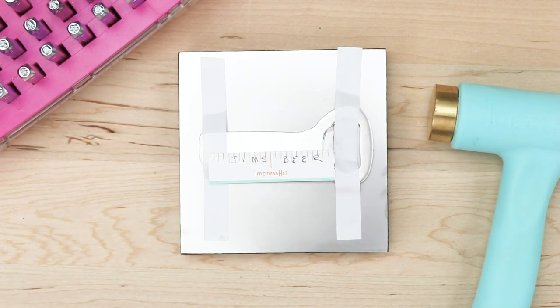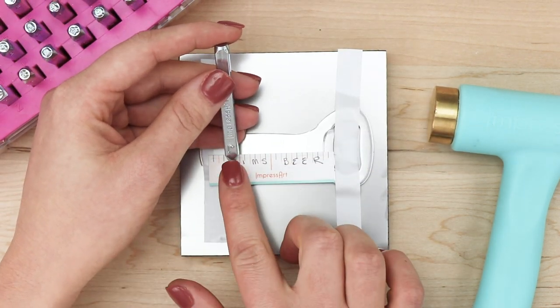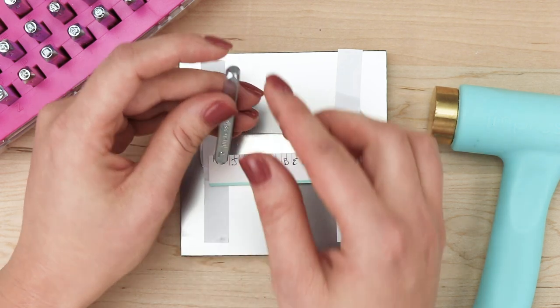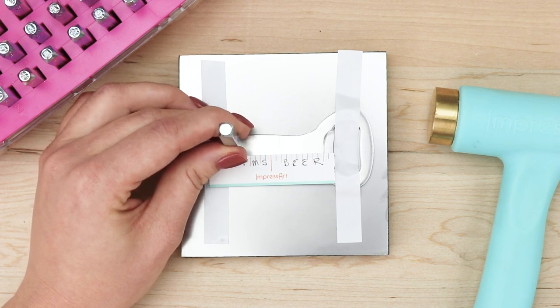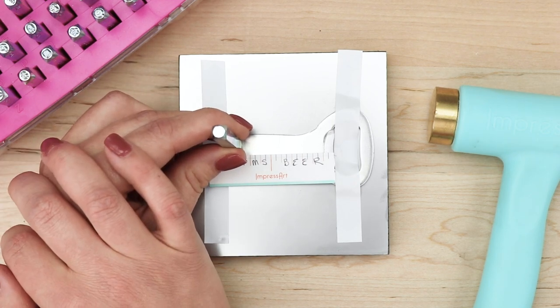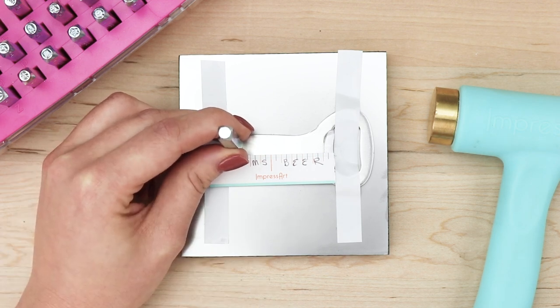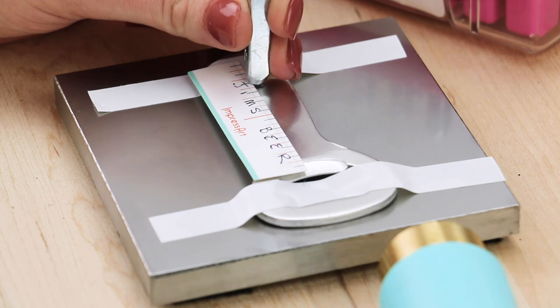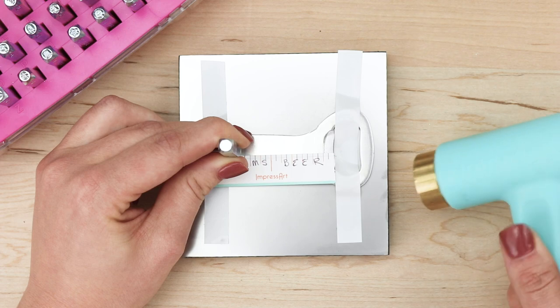Then pull your first stamp out of your letter set. When you're stamping with ImpressArt stamps, make sure the logo on the side of the stamp is facing you. Hold the stamp towards the bottom of the stamp shank and lightly anchor your hand around the block onto your work surface. Then place the stamp on the bottle opener above the corresponding mark on the guide and lightly drag the stamp towards the guide mark until you feel it catch the edge of the guide. Take your hammer and give it one hard hit.